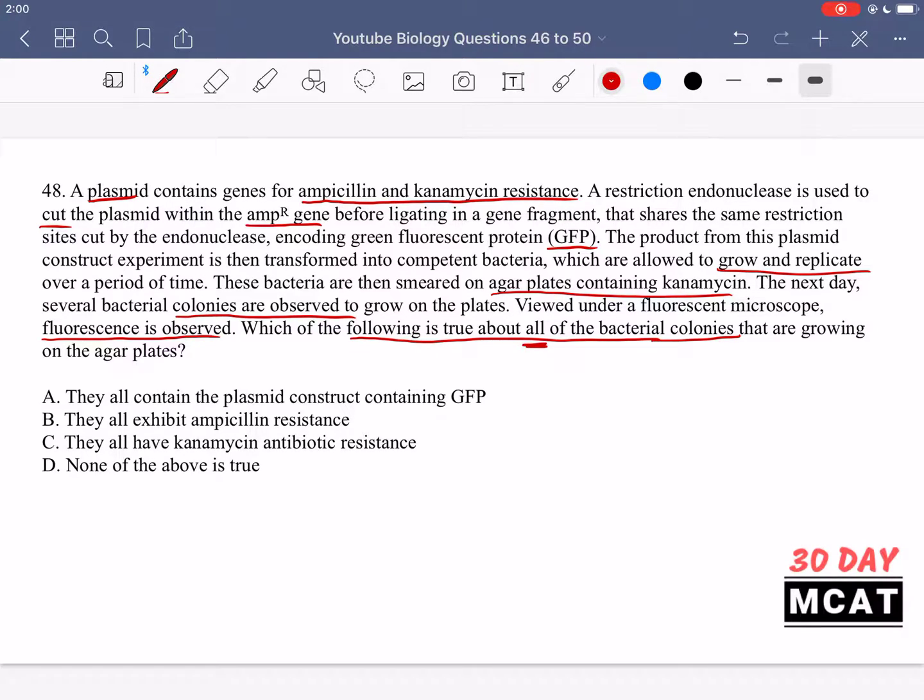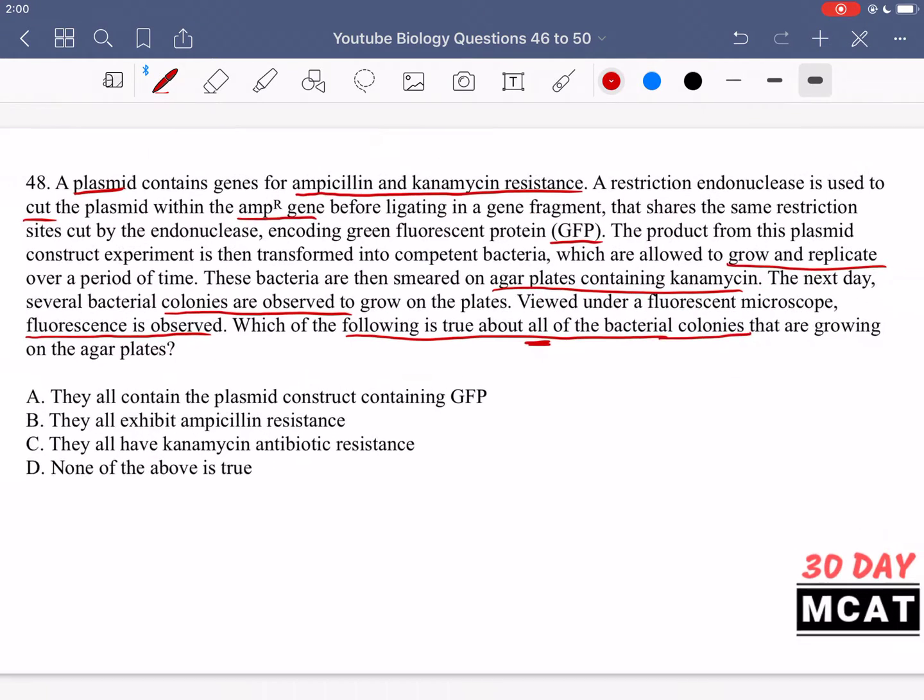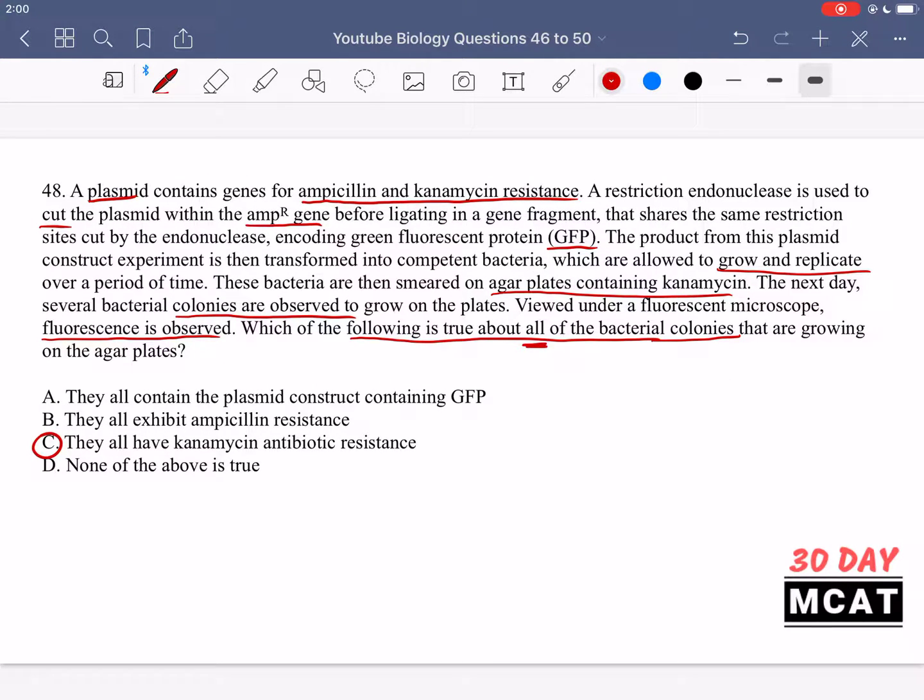So if we see that they're growing on canamycin media, that means that these bacteria must have uptaken the plasmid, which contains the canamycin resistance gene. That is why they're able to grow, otherwise they would have died because of canamycin. So they do have canamycin resistance. So that is something we can say about all of them. So option C would be correct here. Something that we can definitively say about all the bacterial colonies that exist on this canamycin medium is that they are resistant to canamycin, otherwise they would not have even grown.